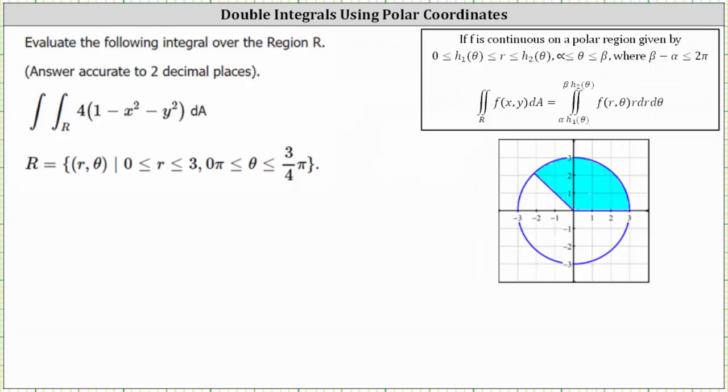We're asked to evaluate the following integral over the region R. Notice region R is given using polar coordinates, where R, the radius, is greater than or equal to zero and less than or equal to three, and the angle theta is greater than or equal to zero radians and less than or equal to 3/4 pi radians. Notice I've graphed the region R here on the right.